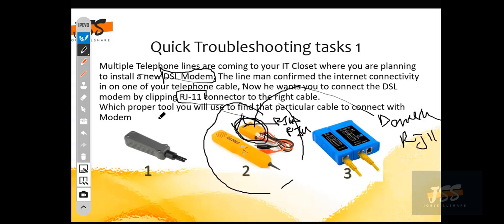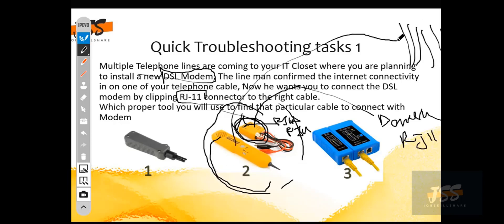You switch on the device and then take the other end into the IT closet. You try placing this device on each cable one by one and listen to the sound. If a cable is not the right one, you will hear a different noise. But as soon as you reach the cable connected to this device, you will hear a very distinct noise identifying that this is the cable you are looking for.